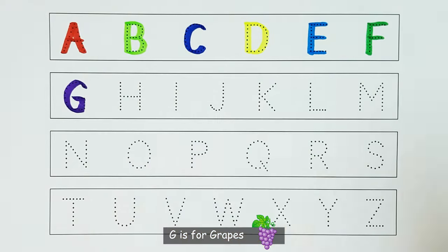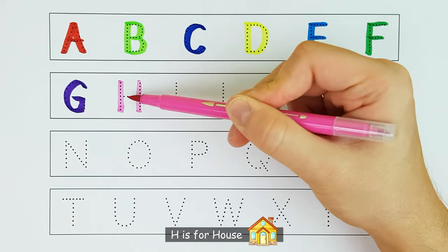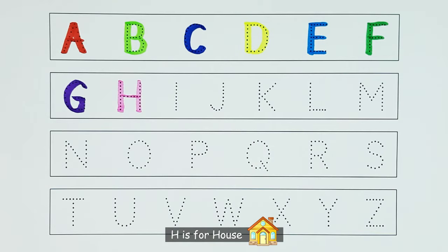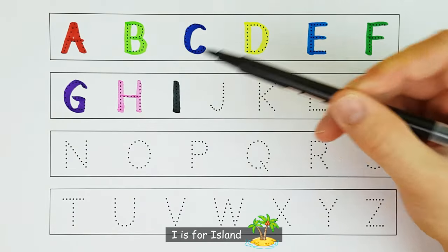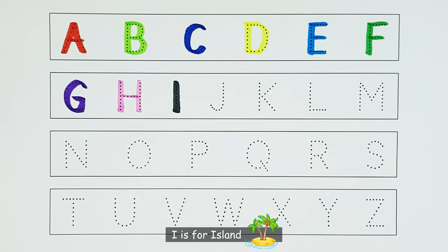G. G is for grapes. G. H. H is for house. H. I. I is for island. I.